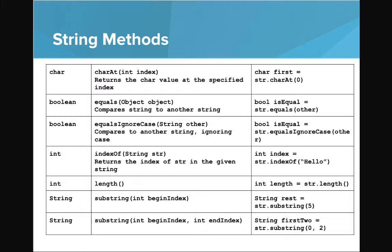So the next method is equals, which lets us compare if two strings are equal. Equals ignore case, which compares if two strings are equal, ignoring differences in cases. Index of, which returns the index of some string in the given string. Length, which returns the length of the string. And substring, which returns a specific part of the string.